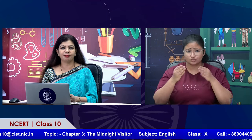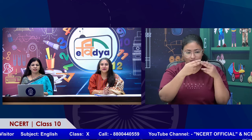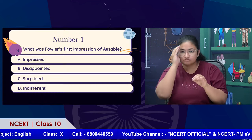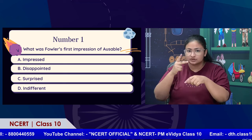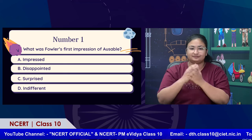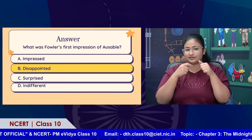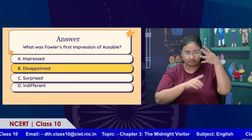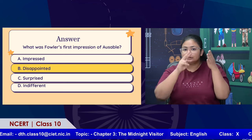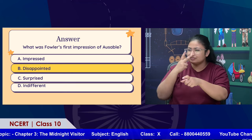Students, are you ready for some activity? Let us have a small quiz to see if our students have followed the lesson. The first question: what was Fowler's first impression of Ausable? From one of the passages we read — 'I know that you are disappointed' — so 'disappointed' is the right answer. Well done, students!